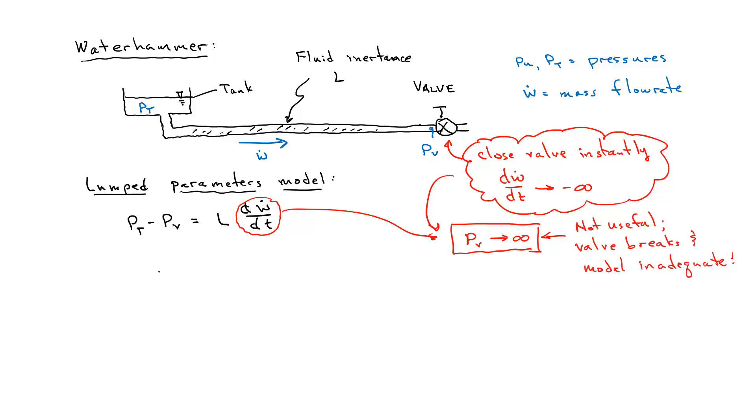I need an actual useful mathematical model for this system if I'm going to design it to not break if I close this valve suddenly. What I need to do is abandon my assumption that all parts of the fluid have the same velocity. That will result in a distributed parameters approach.